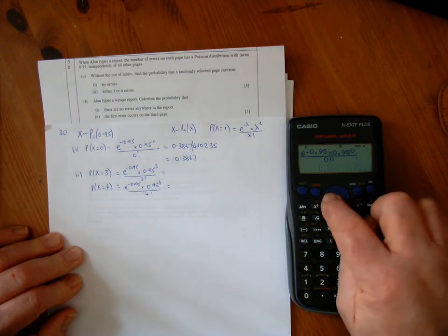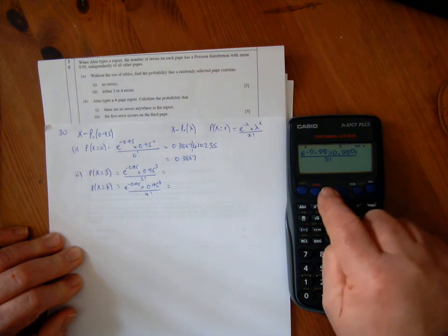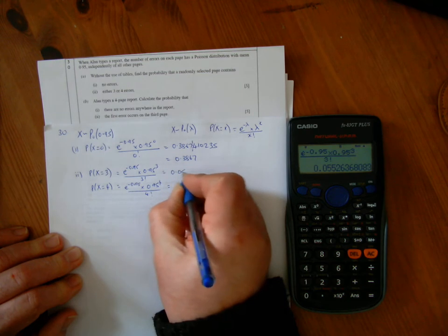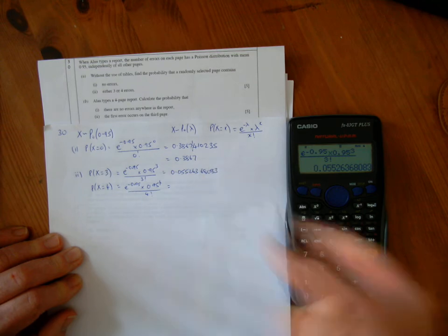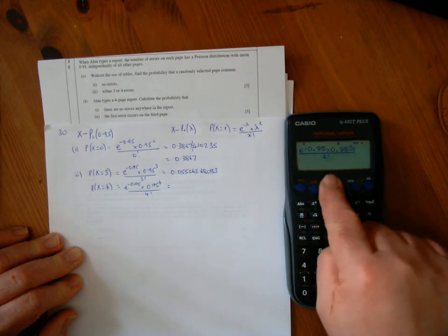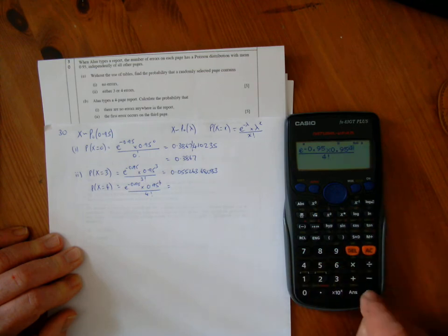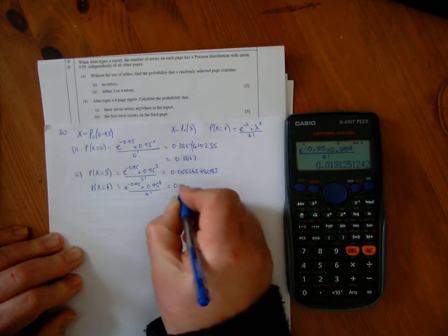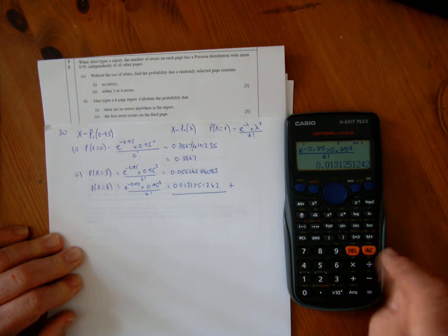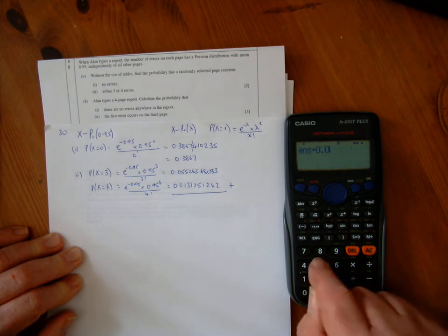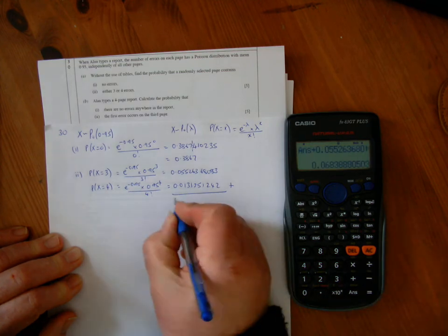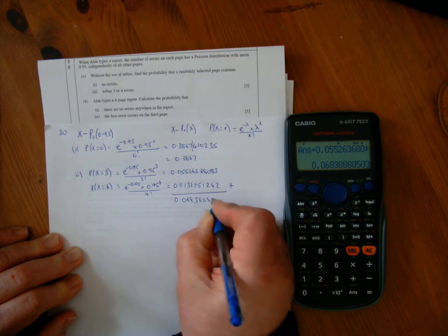I can use the replay feature here. I'll just change the 0 to a 3. That's 0.055. And change the 3 to a 4—that's 0.0131242. Then I add those up because it's either 3 or 4.